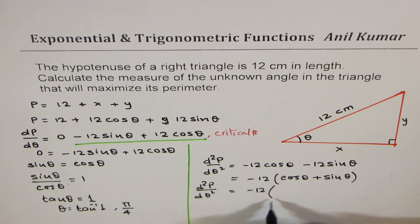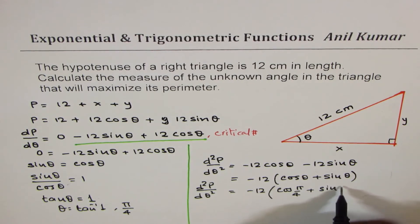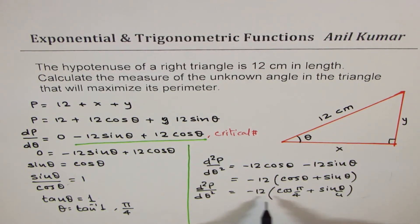So if I substitute π/4, which is cos π/4 + sin π/4, which is 1 over square root 2, I do get an answer which is less than 0, since it is negative.